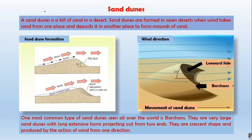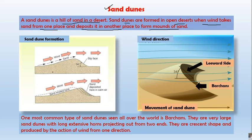Sand dunes are hills of sand in a desert. When sand gets deposited by wind in the form of a hill or small mound in a particular area of the desert, it is called a sand dune. Sand dunes are formed in open deserts when wind takes sand from one place and deposits it in another to form mounds. Sand dunes change their position in the direction of the wind.